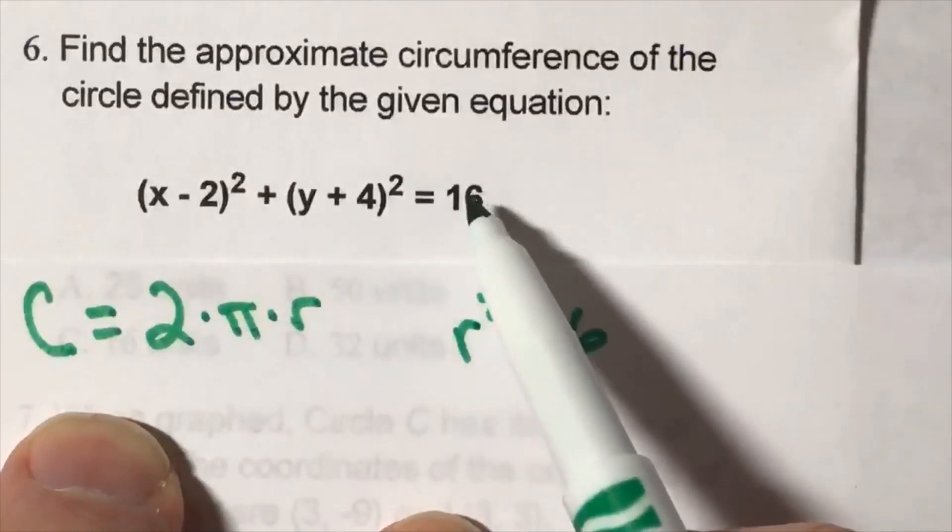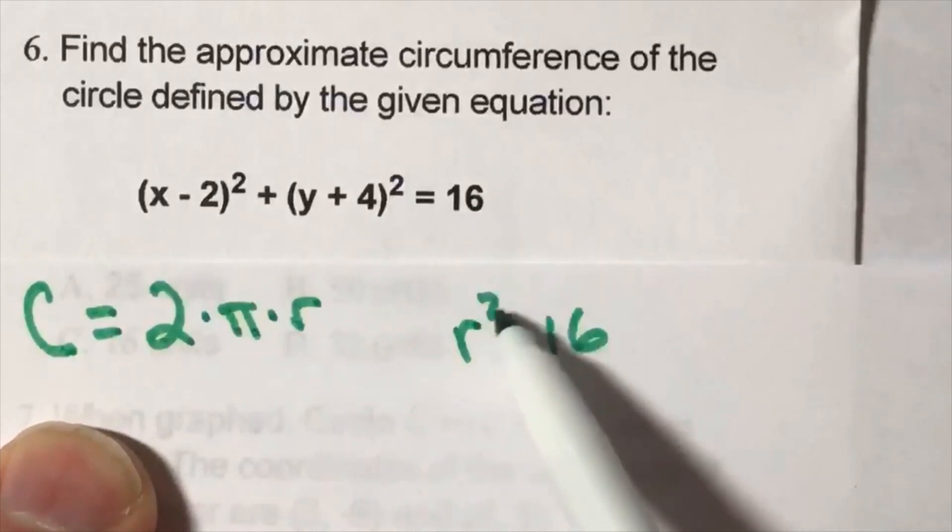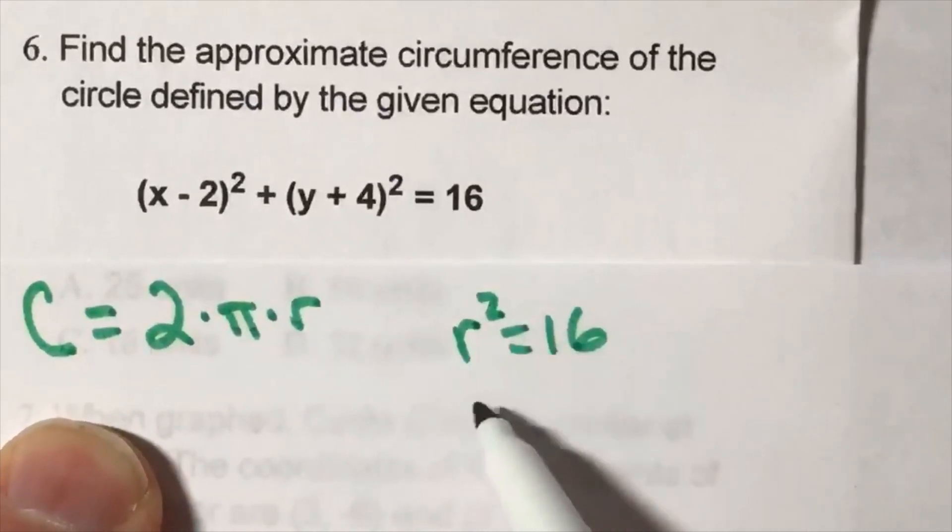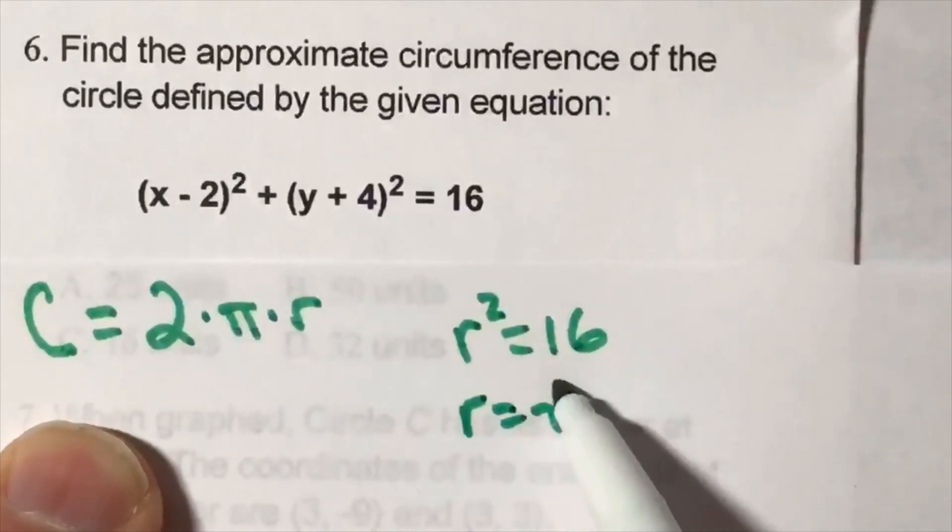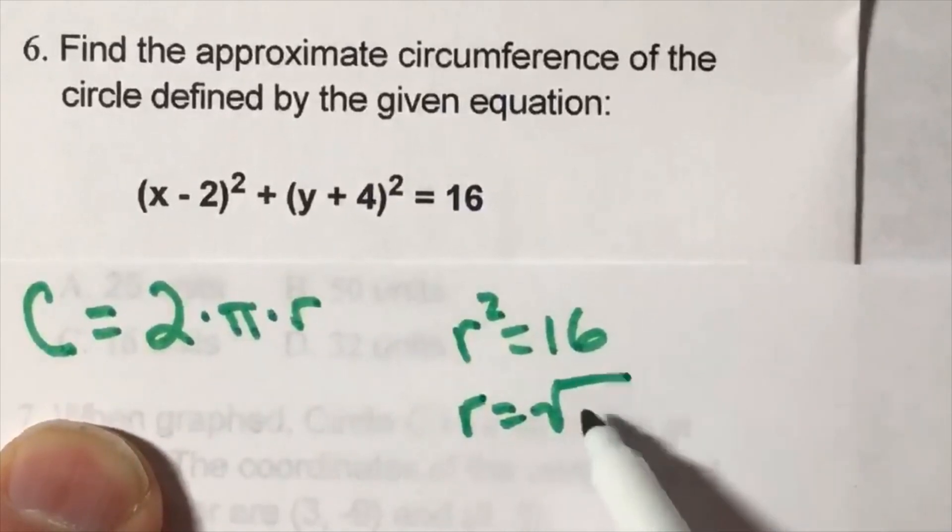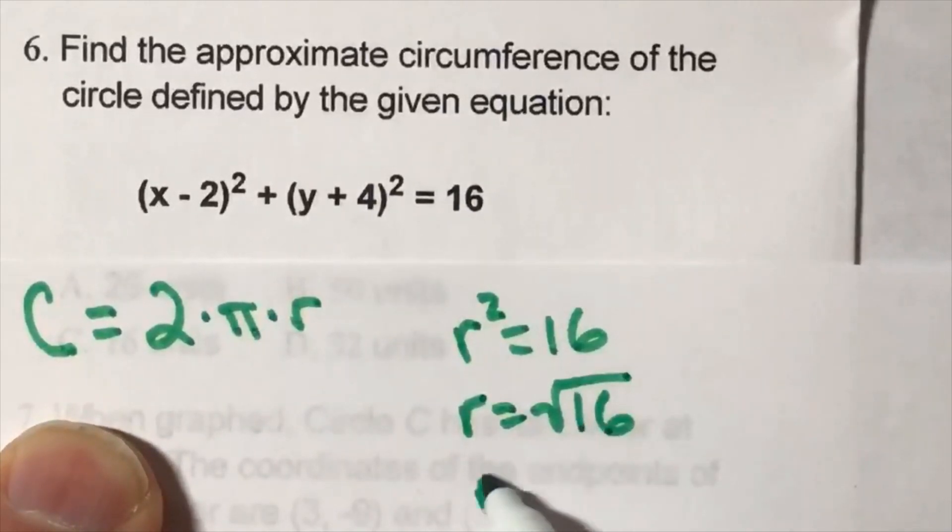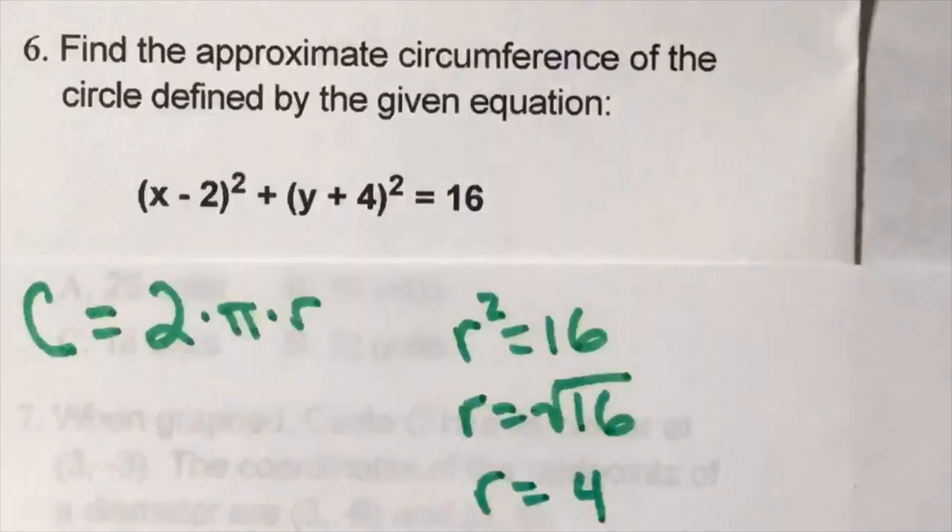r squared will equal this. In order to get rid of the square to find out what the radius is, we have to square root the opposite side. So the radius is equal to 4.